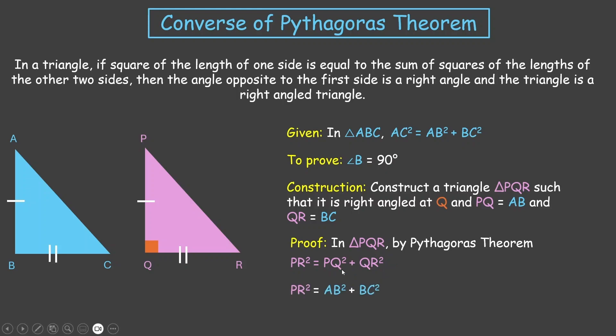Also, PR² equals AB² plus BC². Why is that? Because AB equals PQ by construction. We have constructed PQ to be equal to AB. Similarly, we have constructed QR to be equal to BC. So we have just substituted the values here.